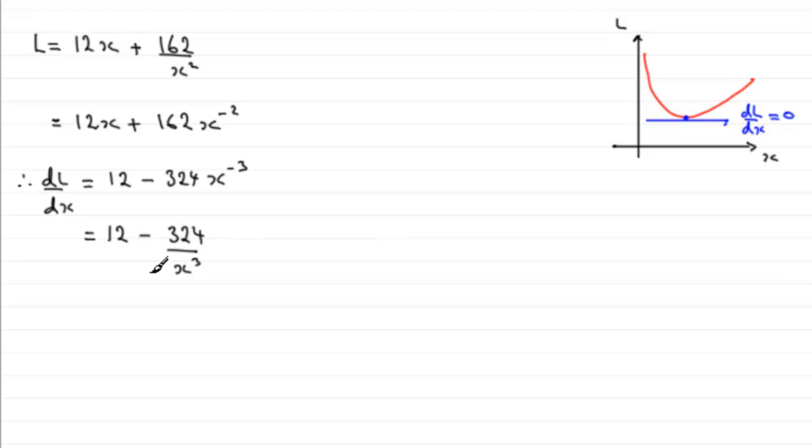Now we know that at this point, called a stationary point, the gradient dL/dx in this case must equal zero. So therefore, at a stationary point, dL by dx must equal zero.